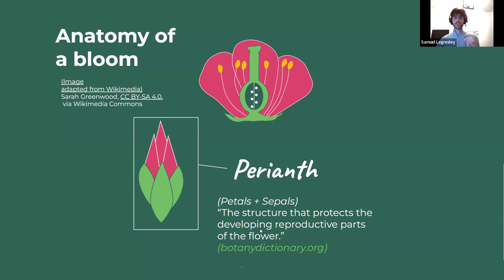The perianth really protects the parts before they're mature, so it's a really important part. The parts that come after are mostly for reproduction and making seeds. The pistil is the female part — also the receptacle for the pollen — describing either a single carpel or a group of fused carpels. Don't get overwhelmed because you can always learn this later.